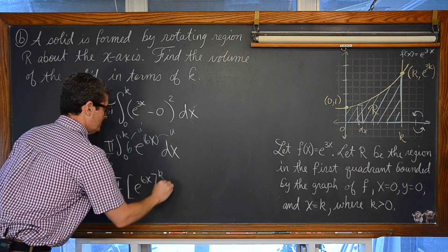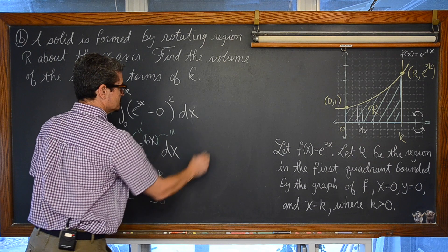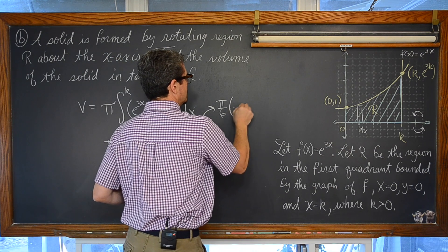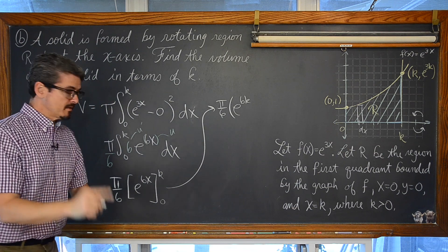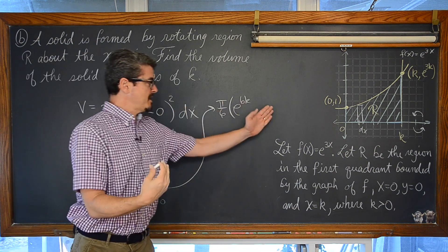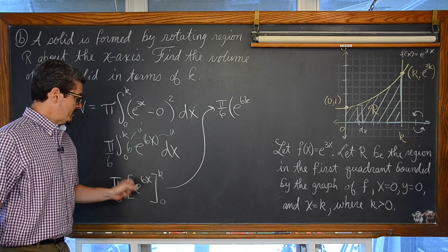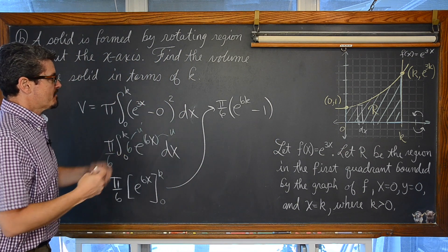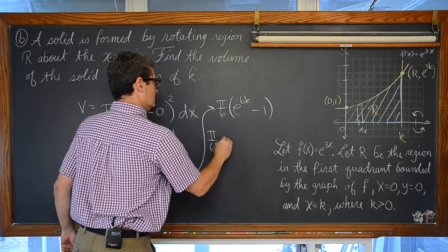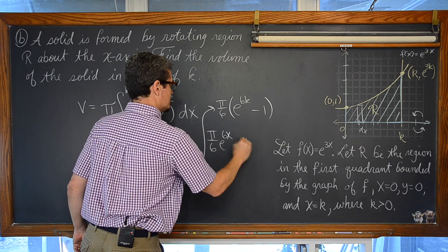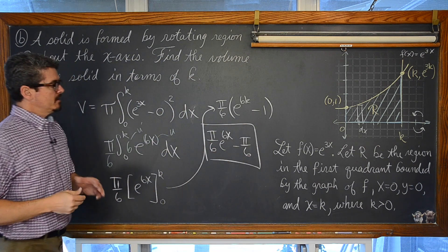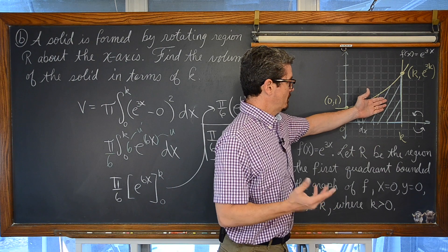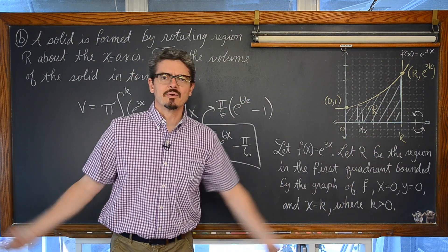So we are looking at pi over 6 times e to the 6x. We have to value with an upper limit of k and that lower limit of 0. So that is going to yield pi over 6 times e to the 6k. And then don't be too quick. Oh, the lower limit is just 0. So this is it. No. When you plug in 0, you are going to have e to the 0 power. Which is not 0. e to the 0 power is 1. So don't be tripped up by that. And our final answer is going to be pi over 6 e to the 6k minus pi over 6. And that is the volume of the solid that we get when we rotate this region about the x axis. Part C coming up right now.